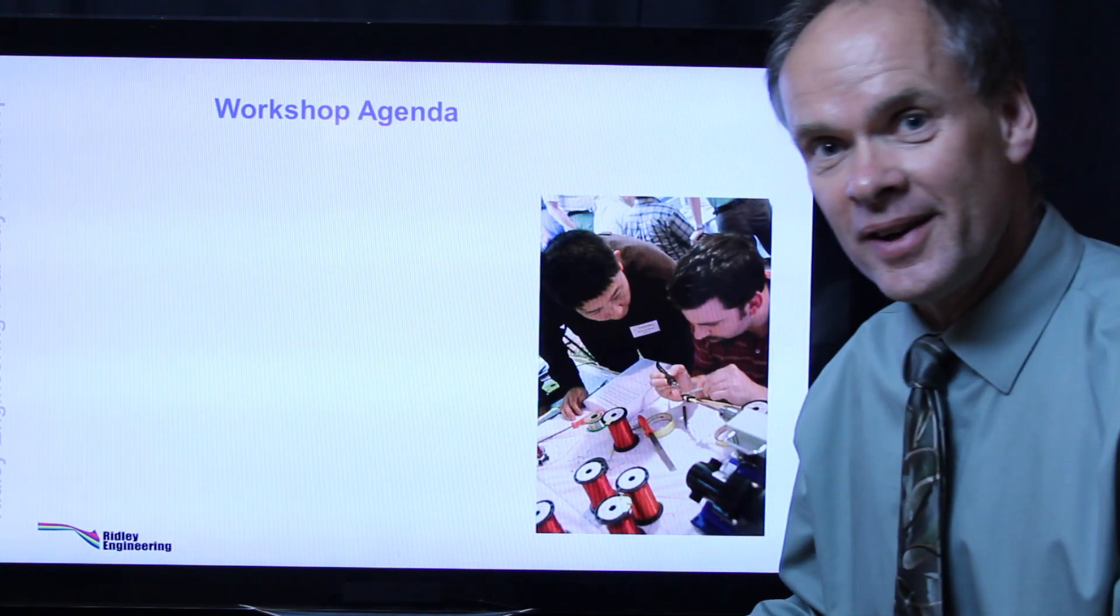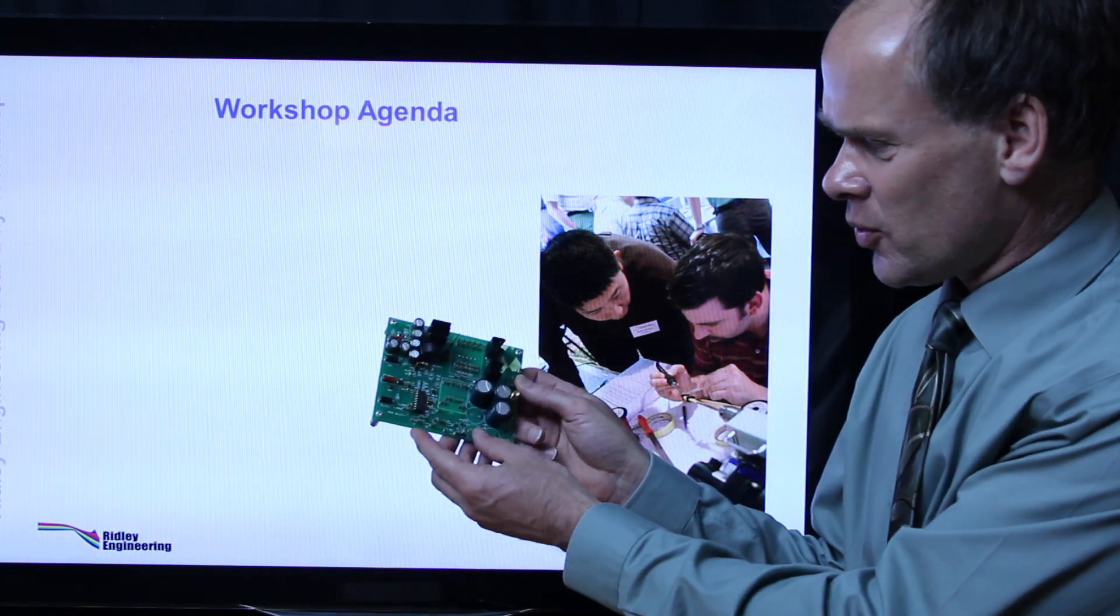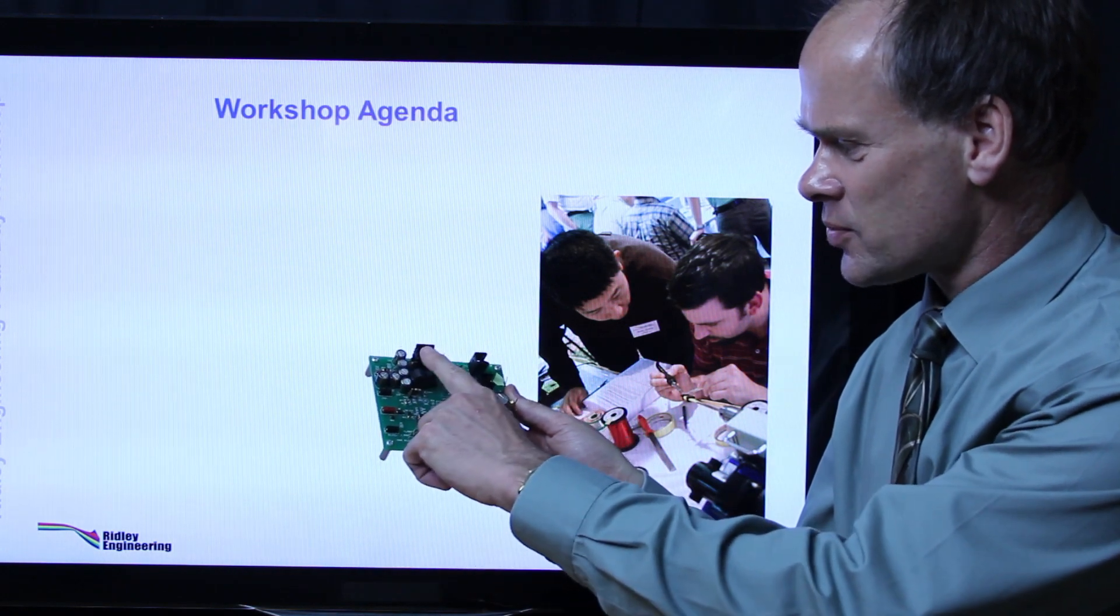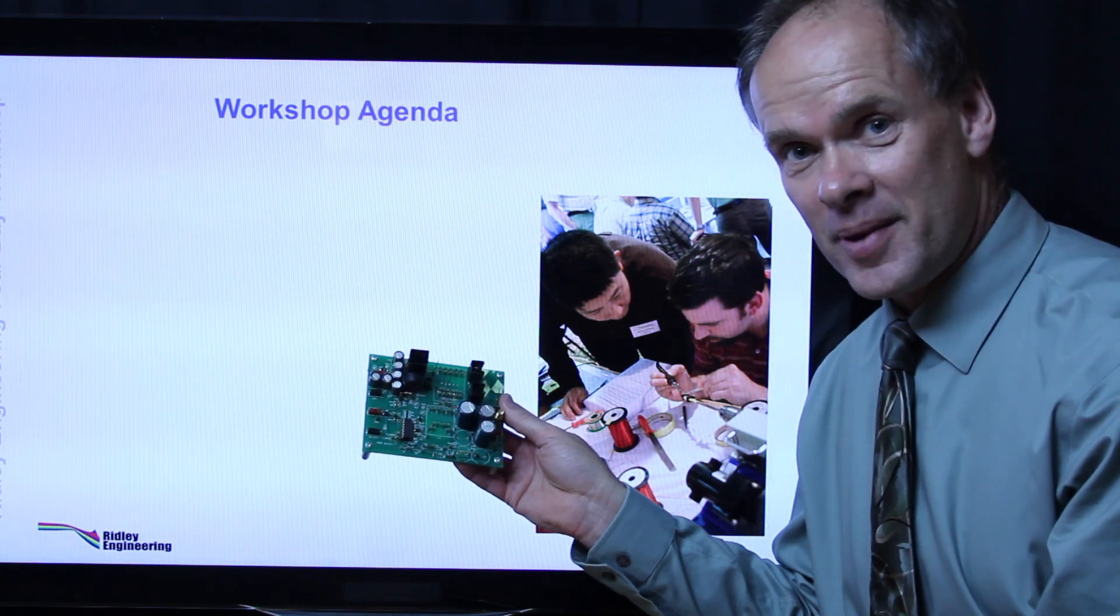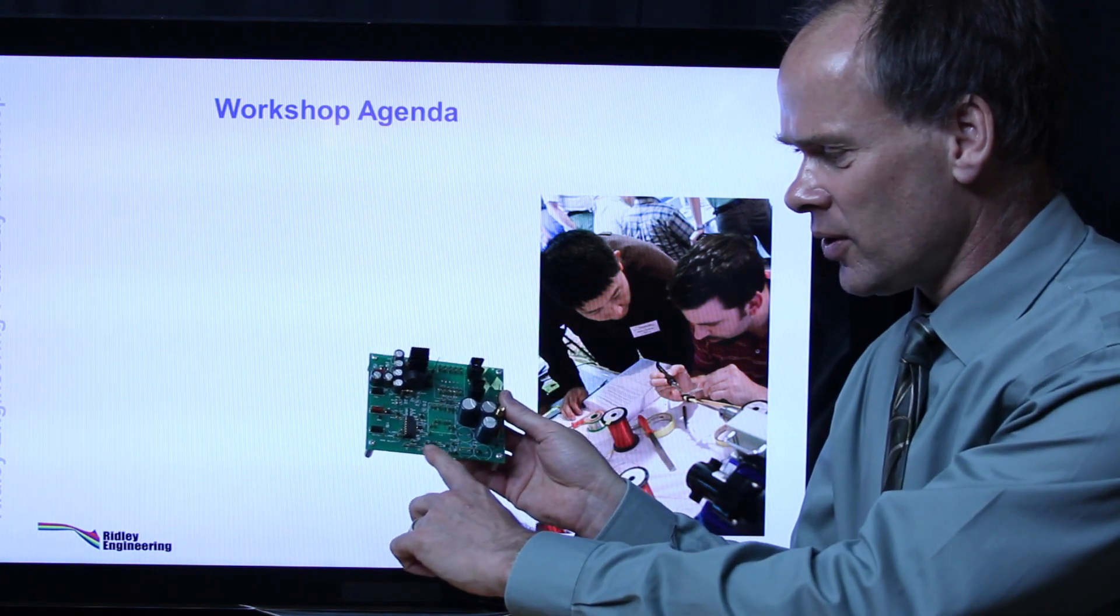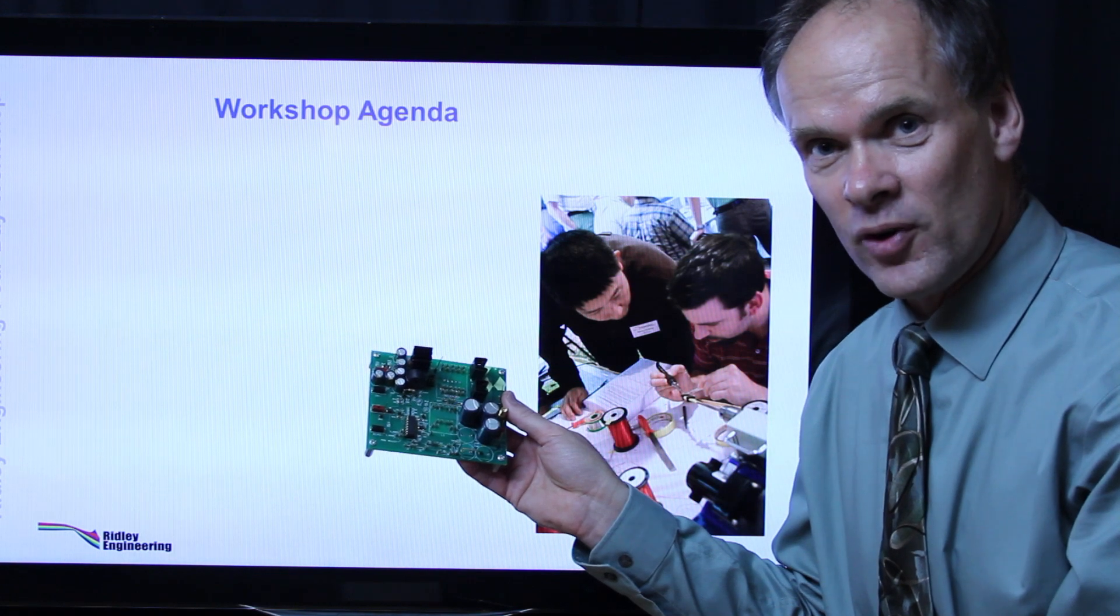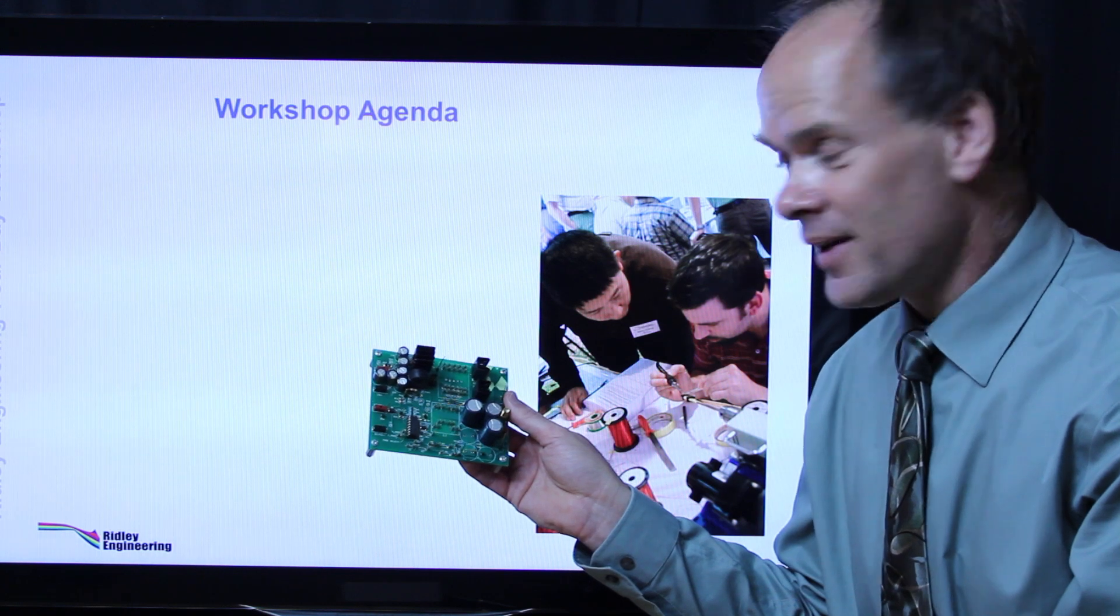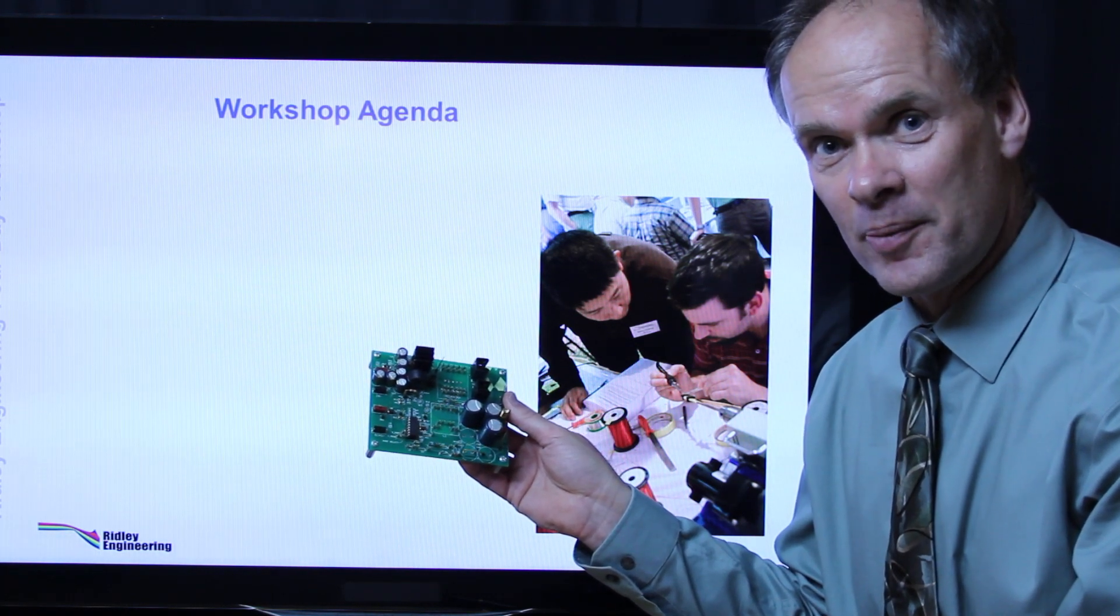Workshop agenda: in the mornings we cover theory and in the afternoon you're going to receive course boards like this one. On here is a controller, input caps, switch, diodes, output caps, but the most important parts are missing—that's the magnetics that plug into these sockets here and the control loop components that plug in here. Your job over the four days of this course is to populate the magnetics and the control and to measure the efficiency and the loop gains of two different power supplies.